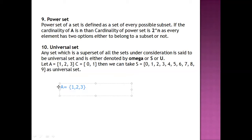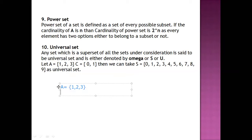So there will be 8 elements in it because in A there are 3 elements. In the power set there will be 2 to the power 3 elements — meaning 8 elements will be there in the power set.